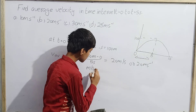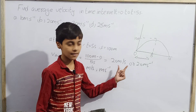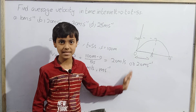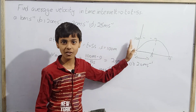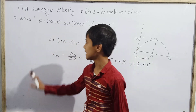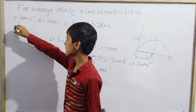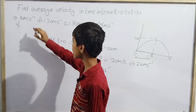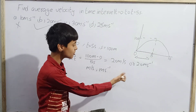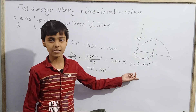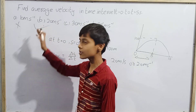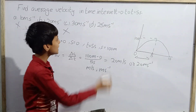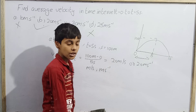The answer is 20 m/s. Option A (10 m/s) is wrong, option B (20 m/s) matches our answer and is the correct answer, option C (30 m/s) is wrong, and option D (25 m/s) is also wrong. Hence option B is correct.